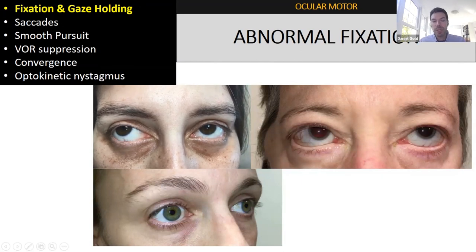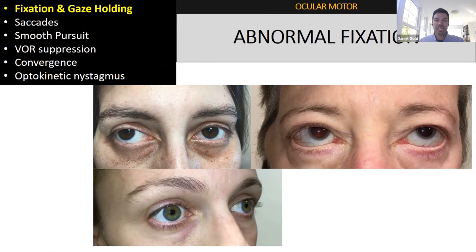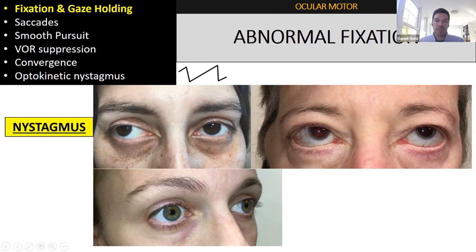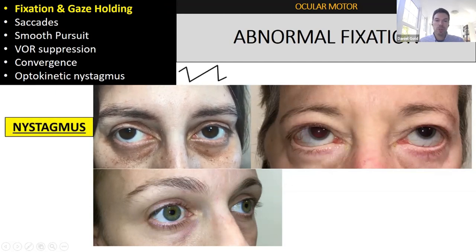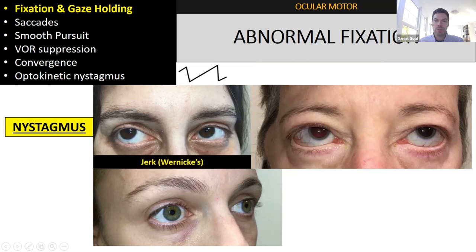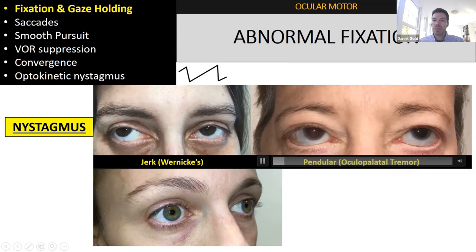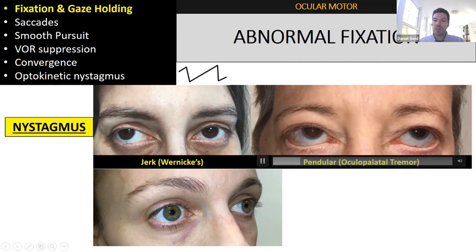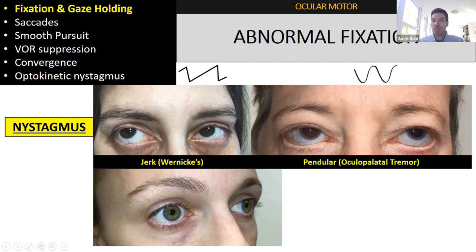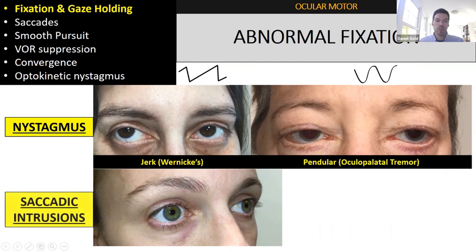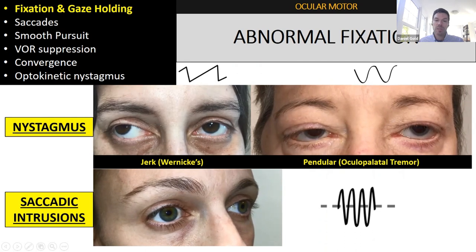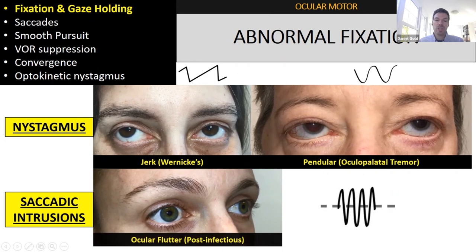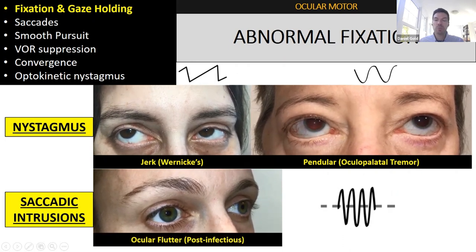Is the patient able to fixate? Are the eyes nice and quiet and steady? This patient has nystagmus — there's a slow phase down, a fast phase up — this is jerk nystagmus, specifically upbeat nystagmus, due to Wernicke's encephalopathy. This other patient has back-to-back slow phases giving a pendular appearance — this is ocular palatal tremor. And this patient has saccadic intrusions: very fast eye movements horizontally back-to-back with no intersaccadic interval — this is ocular flutter, which was post-infectious.